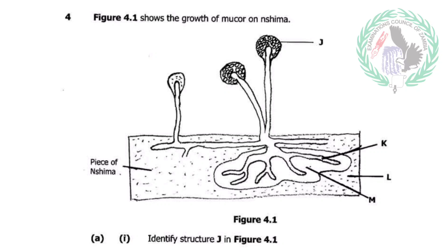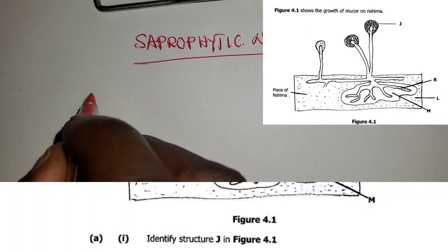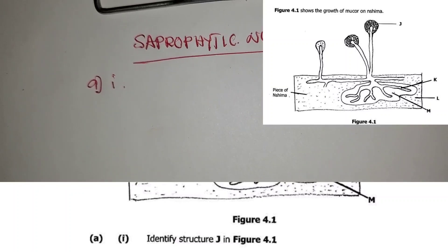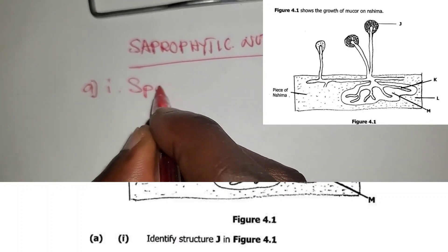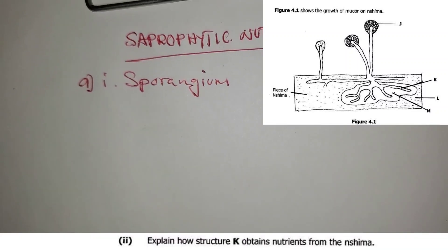Let's look at saprophytic nutrition by answering this question. The question reads figure 4.1 shows the growth of mucor on nshima. The first question, which is question (a)(i), is saying identify the structure labeled J in figure 4.1. So structure labeled J is sporangium.